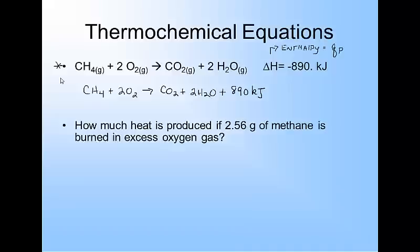Alright, thermochemical stoichiometry is really relatively easy. So here's the first question. It says, how much heat is produced if 2.56 grams of methane is burned in excess oxygen gas? So you're going to start with the 2.56 grams of methane gas. And of course, what do we always do? What's the very first ratio?